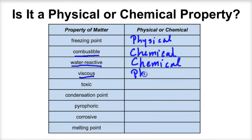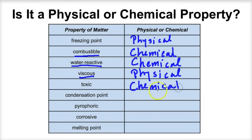If we said something is viscous, that refers to a fluid's ability to flow, so that's going to be a physical property. If we said that a substance was toxic, that would be a chemical property. Condensation point — if we said that water vapor condenses at 100 degrees Celsius and turns back into liquid, that is going to be a physical property.